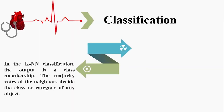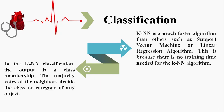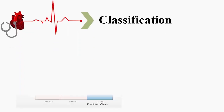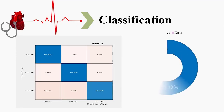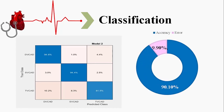For classification, we used the KNN classifier. In KNN classification, the output is a class membership, and the majority vote of the neighbors decides the class of any object. KNN is a much faster algorithm than others such as Support Vector Machine or linear regression. This is because less training time is needed for the KNN algorithm. The confusion matrix of KNN shows the accuracies for each class of CAD, and the overall accuracy for CAD classification is 90.1%.